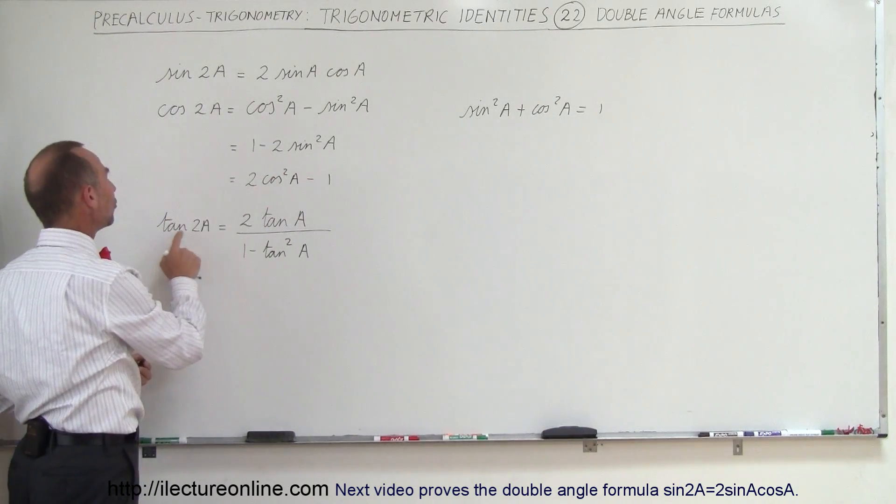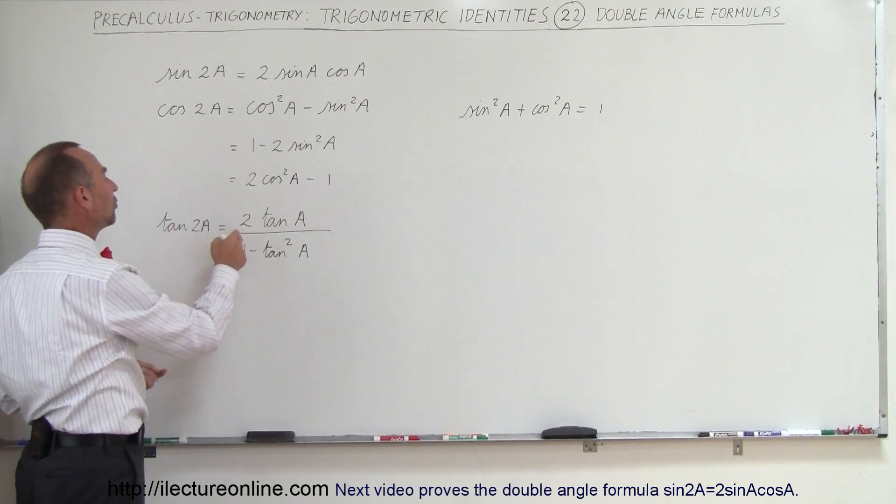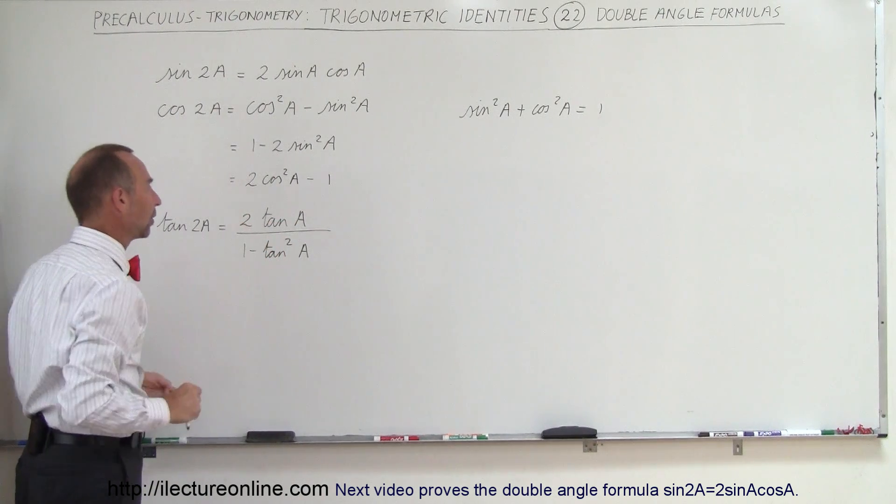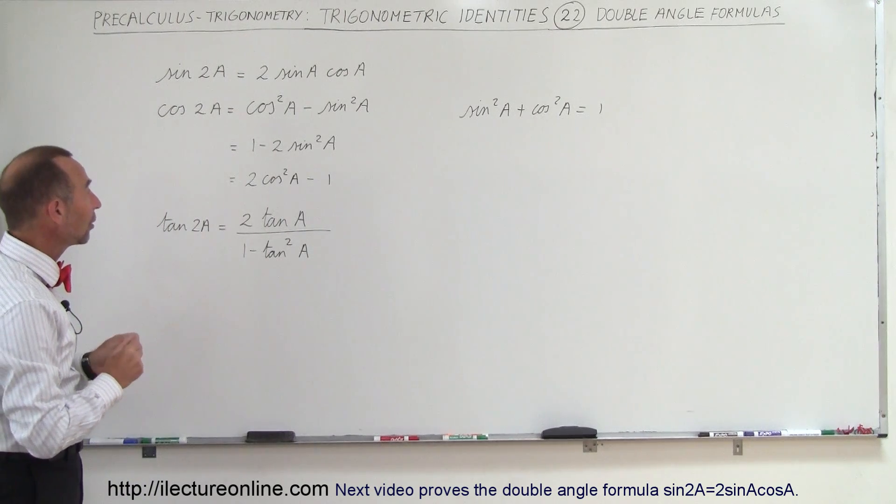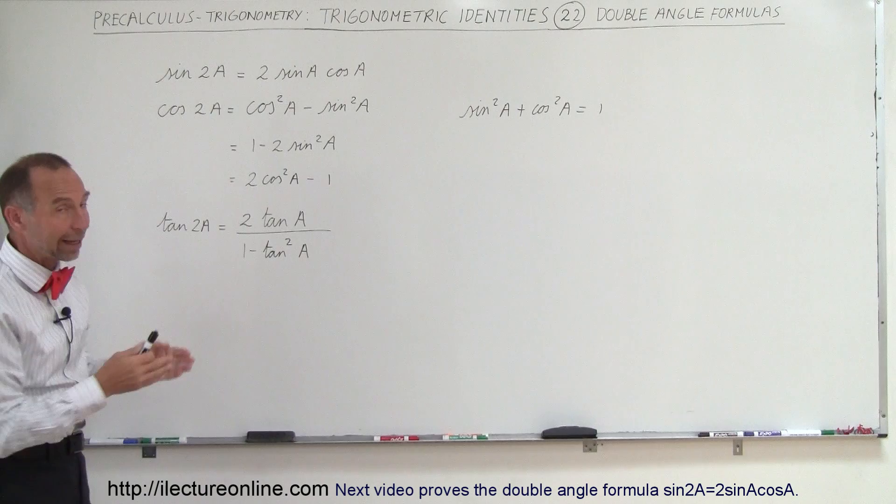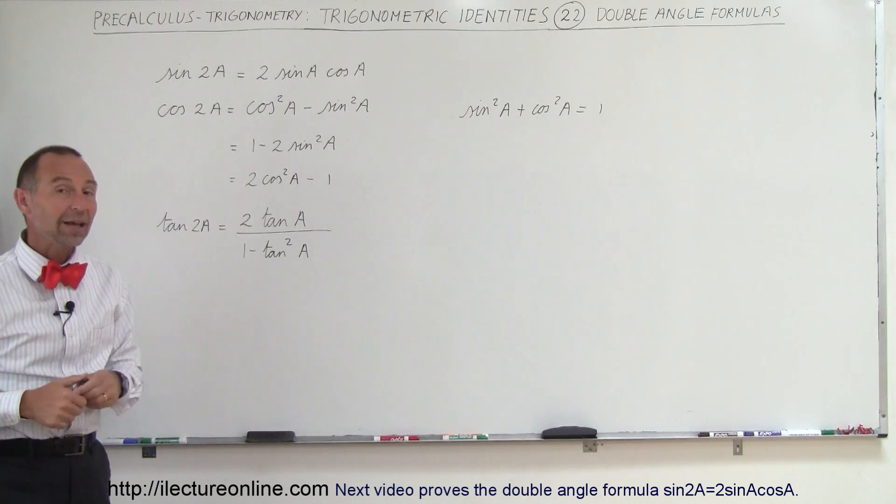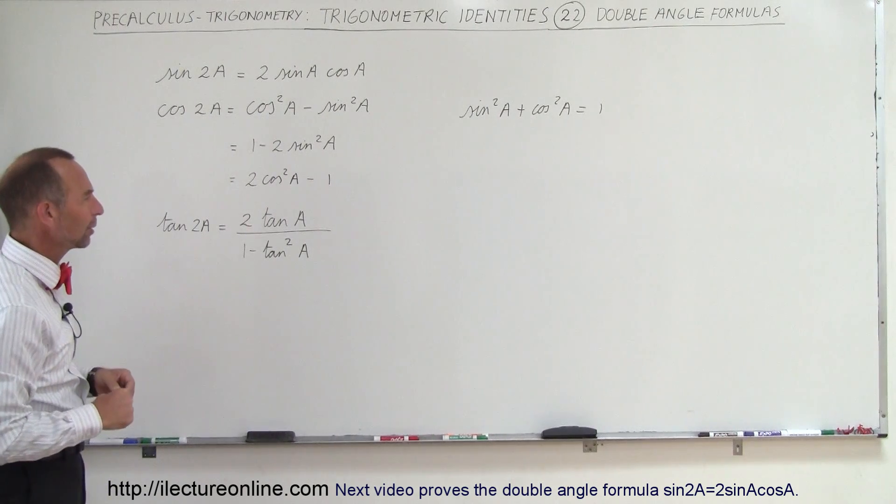And finally, the tangent of 2A can be written as 2 times tangent of A divided by 1 minus tangent squared of A. So you can convert from a double angle to a single angle, or from a single angle to a double angle, whichever way is most convenient at the time that you're working the problem.